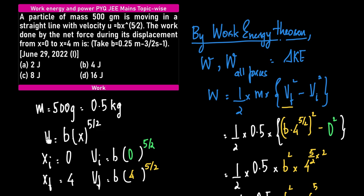What is xi? xi is u when x equals 0. What is Vi? Vi is v when x equals xi. Xi equals 0, so Vi is b times 0 to the power 5/2, which equals 0.